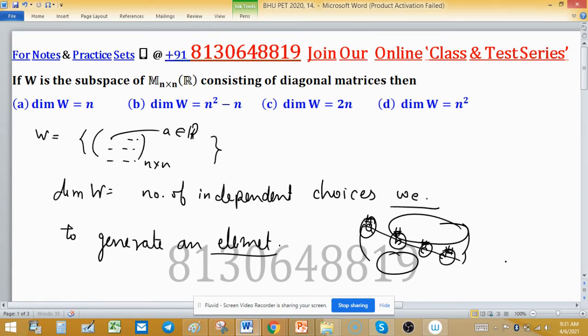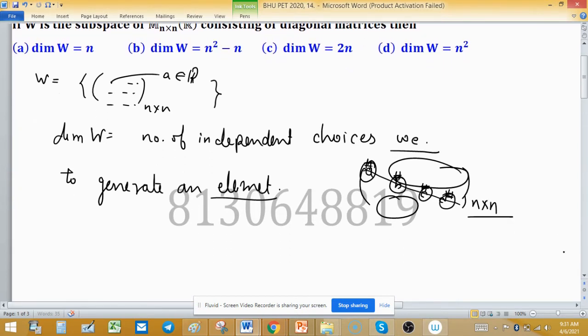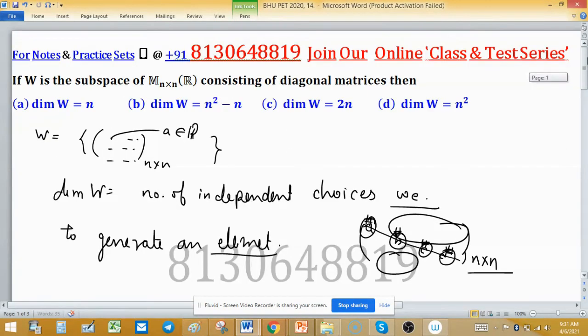How many? Because the size of the matrices is n×n, so n independent choices we have. So dimension of W is n. If you have studied linear algebra in earlier classes, then you can directly put the answer. So option A is true.